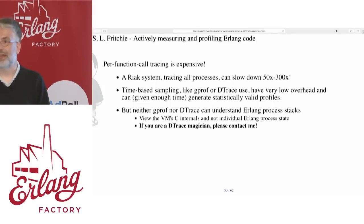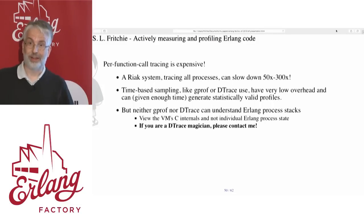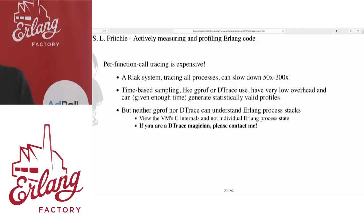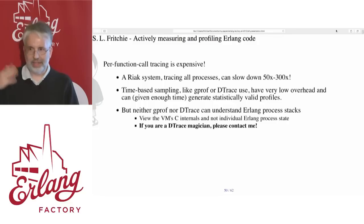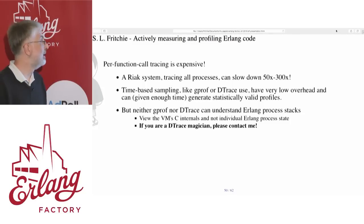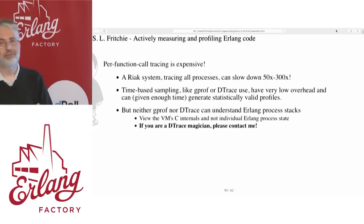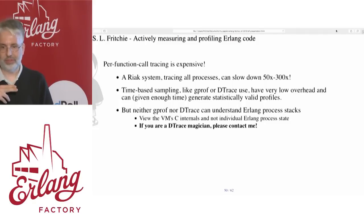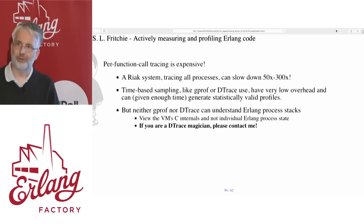I can really slow down a Riak system a lot by turning on tracing on all of these processes. Time-based sampling like gprof has been using for decades, or DTrace, have very little overhead. With enough time to gather samples, you can generate statistically valid profiles using this method. But gprof and DTrace don't give you any information about what Erlang process is running and what BEAM code is being executed. If you're a DTrace magician or know one who could help with this problem, please let me know.